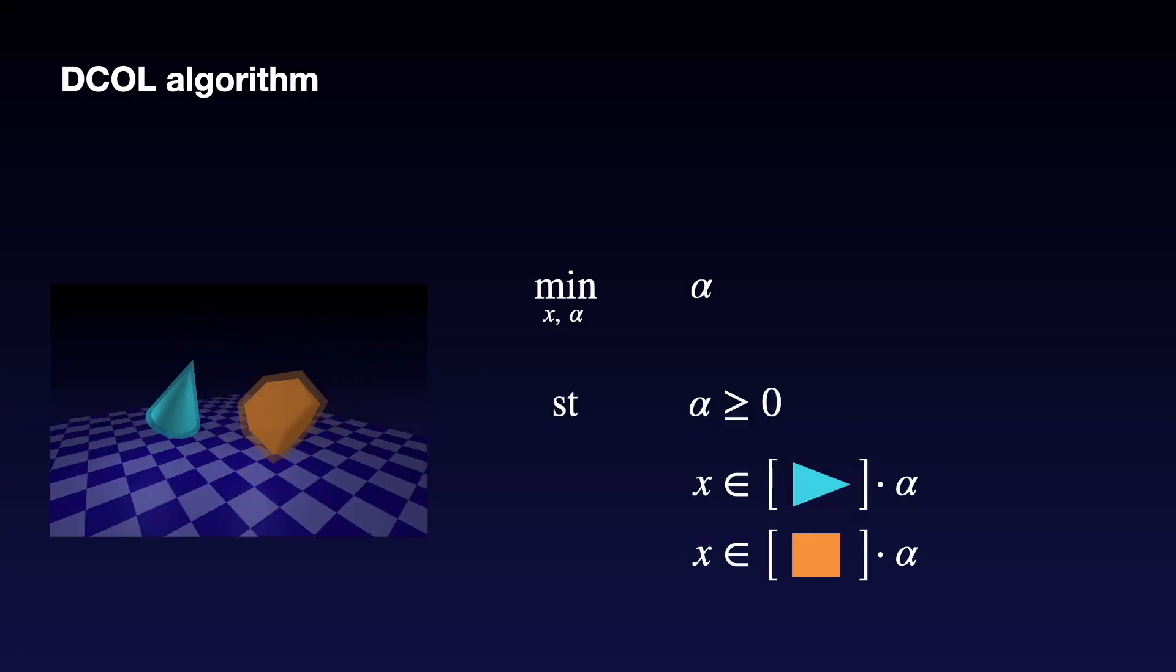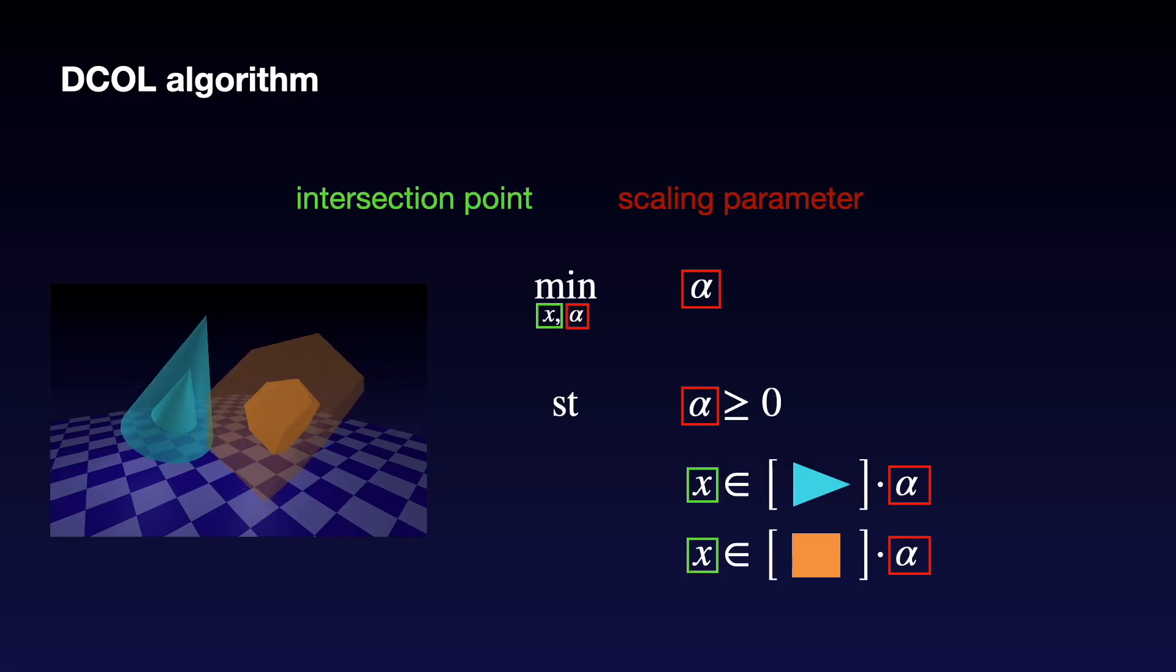A convex optimization problem is solved that finds the minimum uniform scaling, alpha, that is applied to each object before an intersection exists. This problem is guaranteed to be feasible, bounded, and can be differentiated with recent advances in differentiable convex optimization.